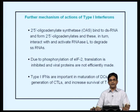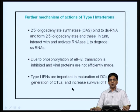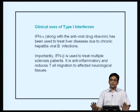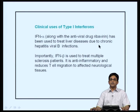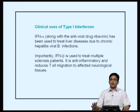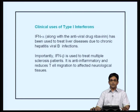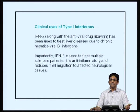Apart from their antiviral roles, Type 1 interferons are now shown to be important in other processes modulating host immunity, including maturation of dendritic cells, generation of cytotoxic T lymphocytes, and in some cases increased survival of T cells. Type 1 interferons are of clinical use. For example, interferon alpha along with the antiviral drug ribavirin is used to treat liver diseases with chronic hepatitis B infections. Interferon beta is used to treat multiple sclerosis — in this case, interferon beta is anti-inflammatory and reduces T cell migration to affected neurological tissues, and it also increases production of anti-inflammatory cytokines.